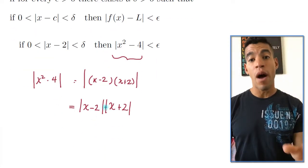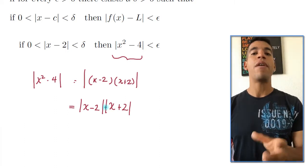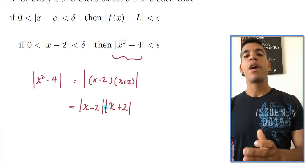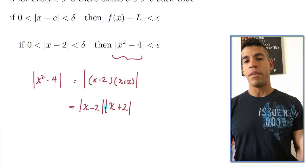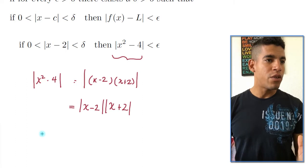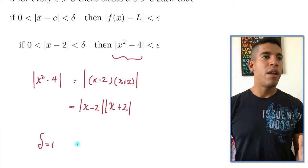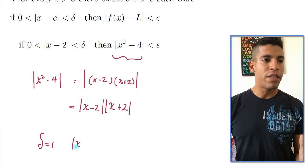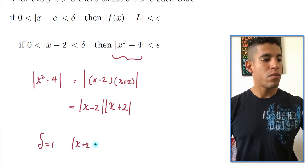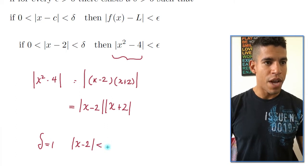So x minus 2, I want that there. But I don't want x plus 2 there. I want to find an upper bound. So we're going to use the same technique. We're going to use the minimum technique. And we're going to set delta equal to 1. So if delta is equal to 1, then we have that the absolute value of x minus 2 is less than 1.